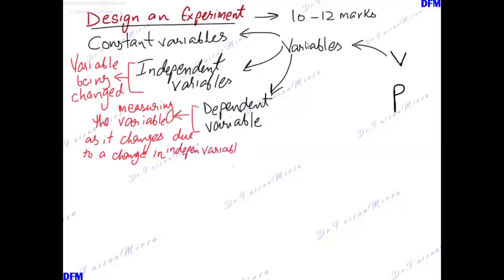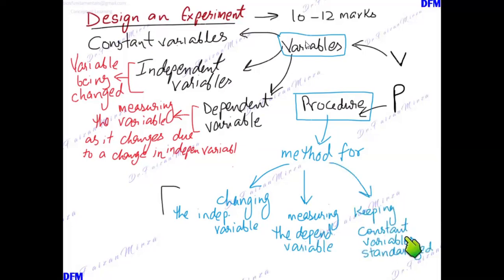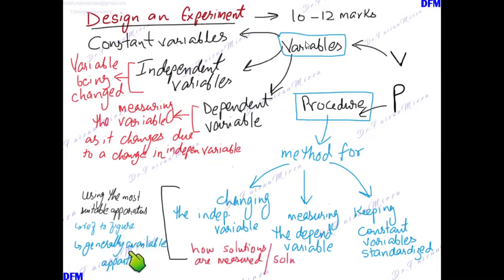In an experiment, we vary the independent variable - we change the cause gradually. When we change the independent variable, the dependent variable changes accordingly. The procedure must describe a method for how the independent variable is being changed, how you are measuring your dependent variable, how you keep variables controlled, and what are the controlled variables. You should state what suitable apparatus you are using, which may include reference to figures provided or generally available apparatus from previous grades.